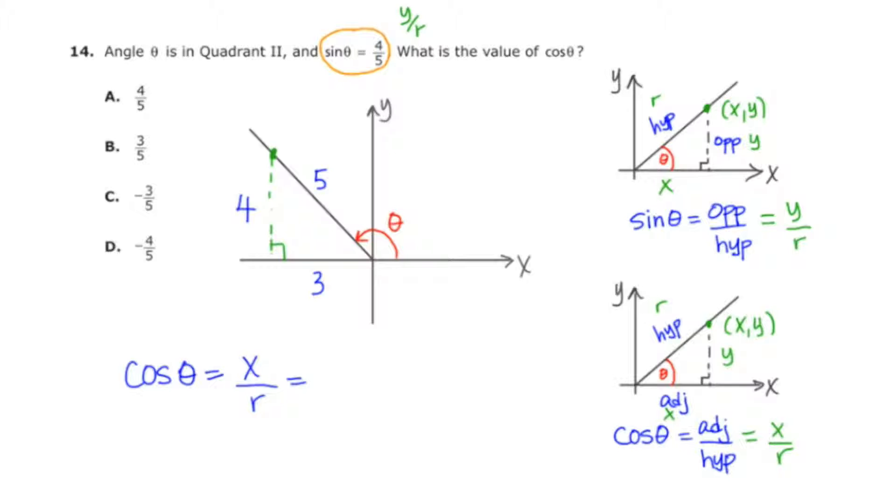And now what I can do is I can label this green point as the point negative three, four. So to get to this green point, I move three units to the left, which makes it negative, and then four units up. So I have my x, I have my y, and I have my r. And these are three very important ingredients in order to answer the question, the x, the y, and the r.